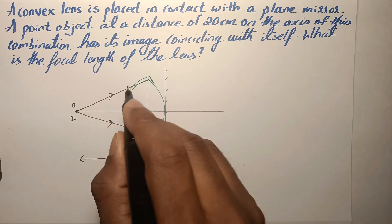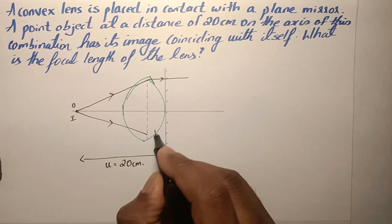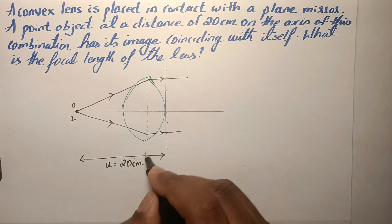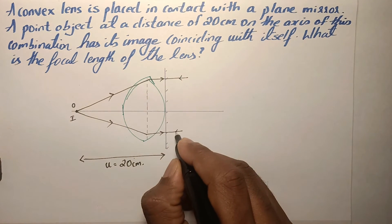So in order for that to happen, the light ray must enter the mirror as parallel rays or parallel to the principal axis, and it gets reflected back also as parallel rays.